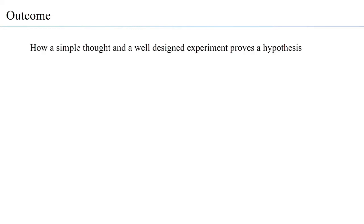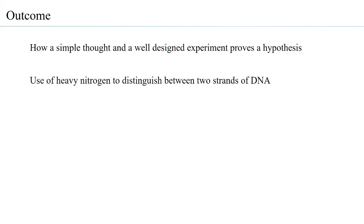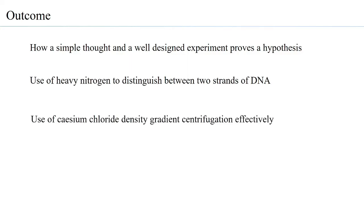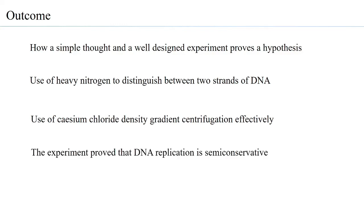What would be the outcomes or understandings from this session? One, how a very simple thought and a well-designed experiment could prove a hypothesis. Two, how use of heavy nitrogen isotope was able to distinguish between two strands of DNA. Three, use of cesium chloride density gradient centrifugation as a technique could effectively give the results, and of course, that the experiment could prove that DNA replication is semi-conservative.